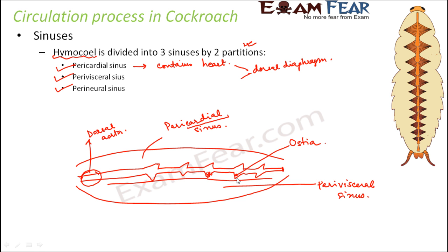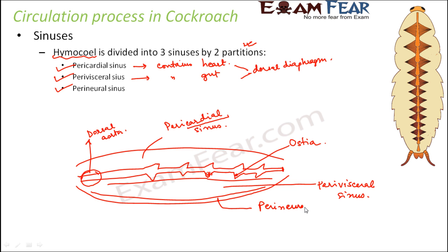The pericardial and perivisceral sinuses are separated by the dorsal diaphragm. The perivisceral sinus contains the gut — the digestive tract. Below that runs the ventral nerve cord. The bottom-most part of the cavity is the perineural sinus, which contains the nerve cord.